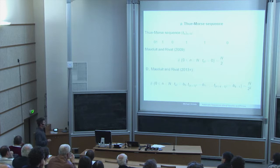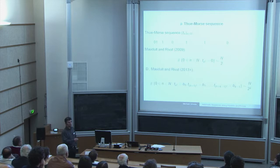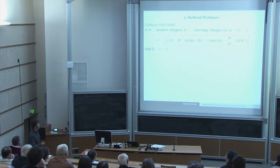What is nice from our point of view is that you start with a deterministic sequence — the Thue-Morse sequence — and by just taking the subsequence of squares, you get something that behaves randomly.